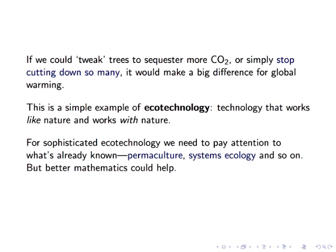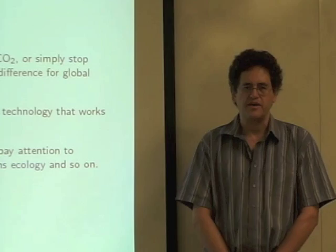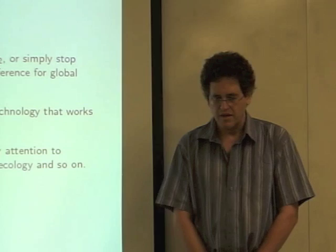But we're really just at the beginning of developing eco-technology. For really sophisticated eco-technology, we need to do a lot of learning. First of all, we need to pay attention to lots of things that are already known. There's something called permaculture, which is an approach to agriculture which is sustainable. There's some branch of ecology called systems ecology, which is the study of ecosystems. And we need to learn about all those kind of things or we could do things that backfire or just don't work.